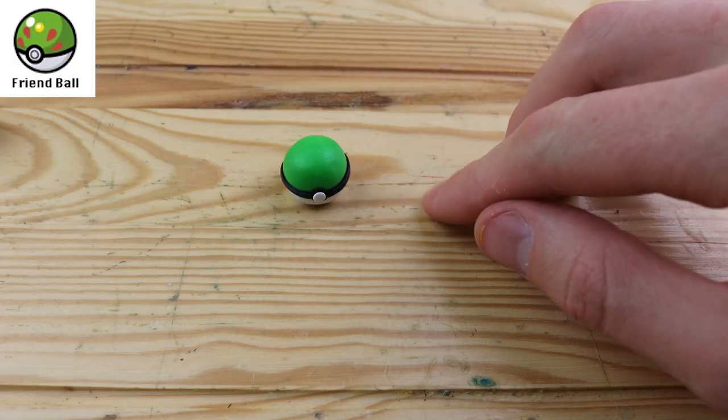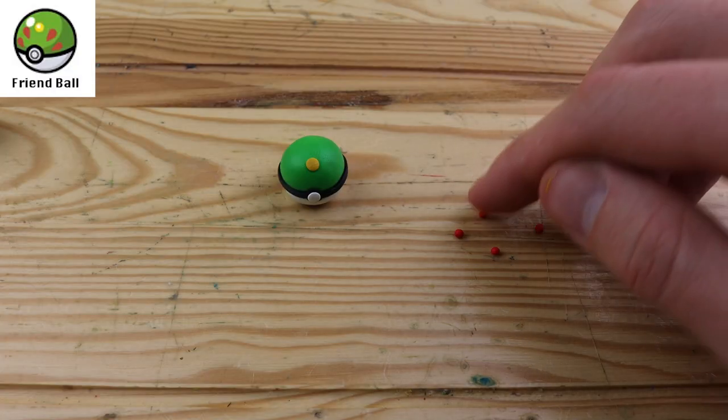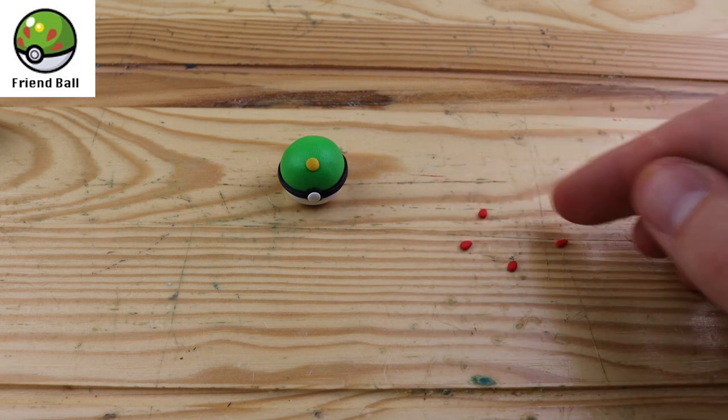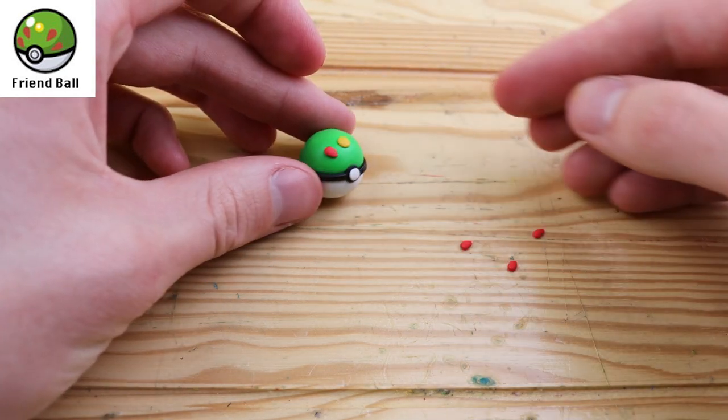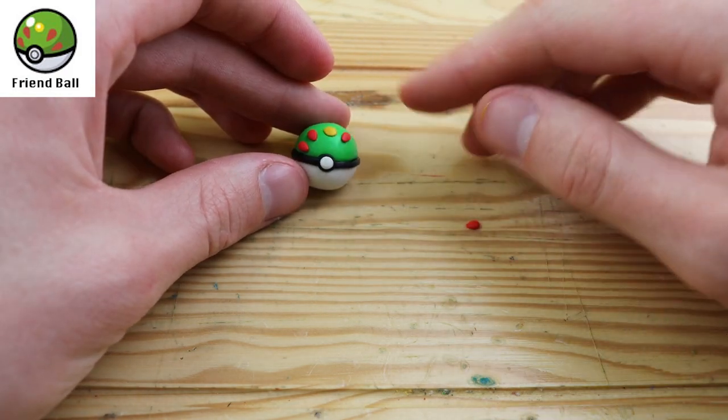Moving on, we have the friend ball. This design really reminds me of a peacock or a turkey, some type of bird that has a big fan in the back. The special ability on this pokeball is that any pokemon caught in a friend ball becomes more friendly immediately when you catch it.